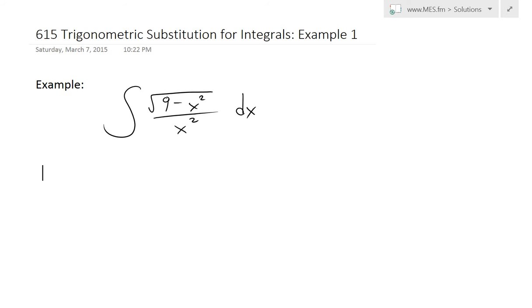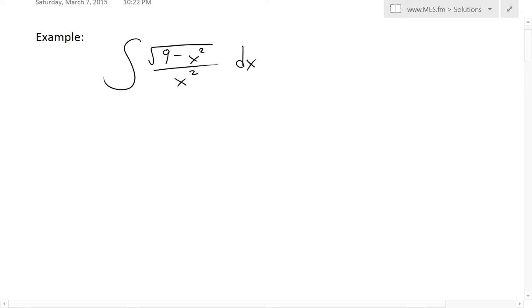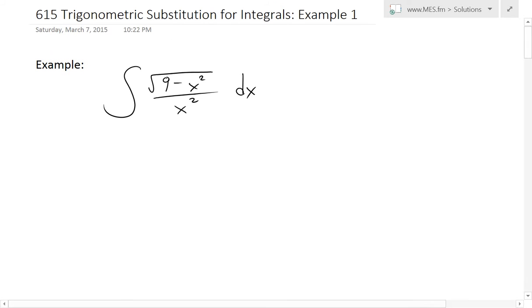It's time for another Math Easy Solution to discuss further into trigonometric substitution for integrals. We'll look at example one of an example series that I'll cover in later videos. Basically, I will solve this example which states: find the integral of square root of nine minus x squared, all divided by x squared, dx.